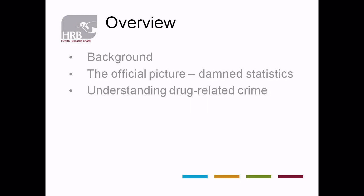And then I'm going to look at what we refer to as the dark figure of drug-related crime — what that official picture doesn't tell us. And then I'm going to go through the various models that have emerged to try and explain the connection between illicit drug use and offending behaviour. There are four dominant models that have emerged in the literature to explain the connection.